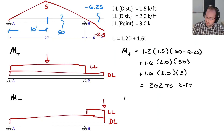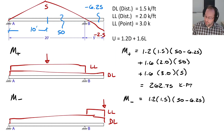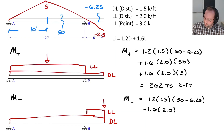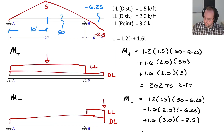For M−, the dead load is the same: 1.2 × 1.5 kips/ft × (50 − 6.25). The live distributed load is 1.6 × 2.0 kips/ft × (−6.25). The point load is 1.6 × 3 kips × (−2.5), the negative influence where that load is located. Calculating that all out gives 46.75 kip-feet.